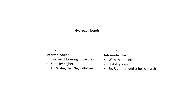Hydrogen bonds can be of two types: intermolecular and intramolecular. Intermolecular means the bond is present between two neighboring molecules, while intramolecular means the bond is present within the same molecule. Intramolecular hydrogen bonds are less stable compared to intermolecular hydrogen bonds. Examples of intermolecular hydrogen bonds include water, double-stranded DNA, and cellulose. Examples of intramolecular hydrogen bonds include right-handed alpha helix and others.